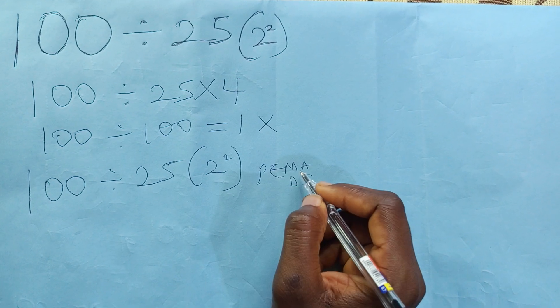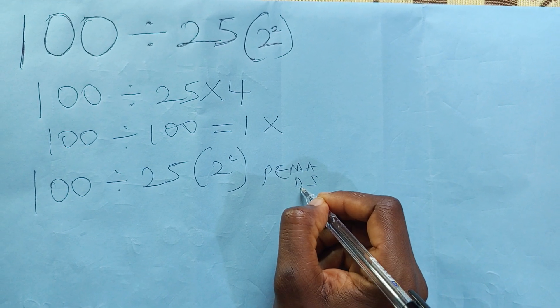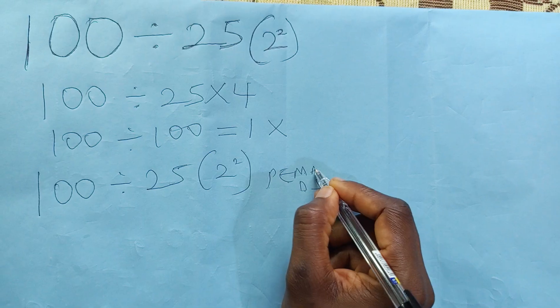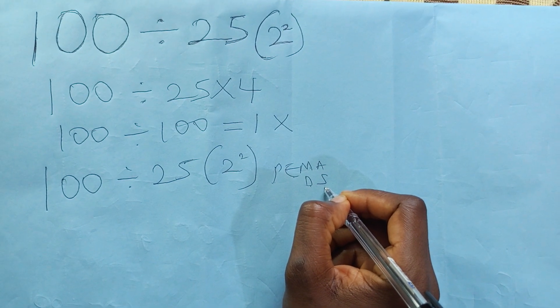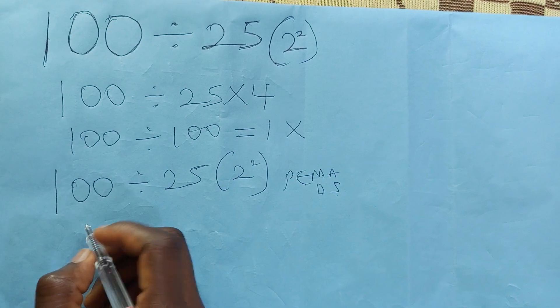then followed by exponents, then multiplication and division—they have equal priority from left to right. Addition and subtraction also have equal priority from left to right.